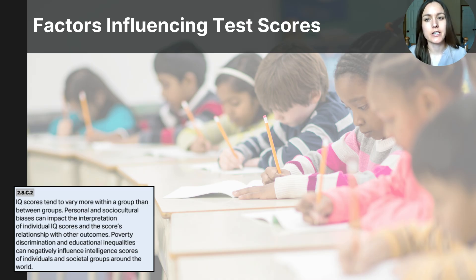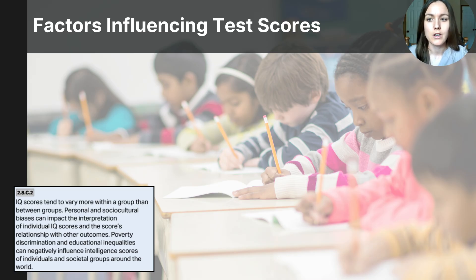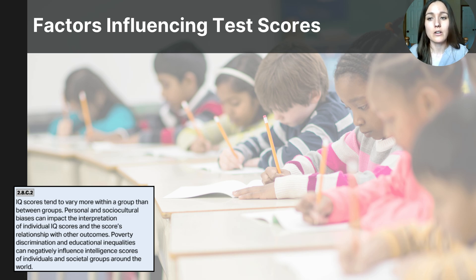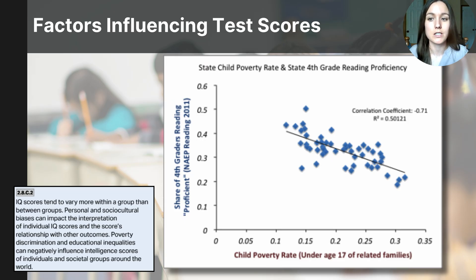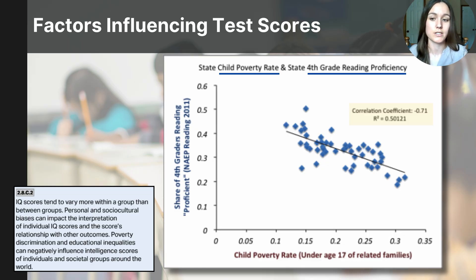In this discussion about intelligence testing, it's important to note that factors other than intelligence itself can influence test results. Factors like poverty and educational inequities can also play a role in student scores. Research has shown that children growing up in poverty often face significant challenges such as inadequate access to quality education, nutrition, and stable home environments, which can negatively influence cognitive development and IQ scores. As shown in the scatter plot on the screen, there is a negative correlation between child poverty rates and the share of fourth-grade readers at proficient levels — as poverty rate increases, the share of students reading at proficiency levels declines.